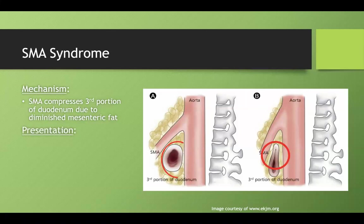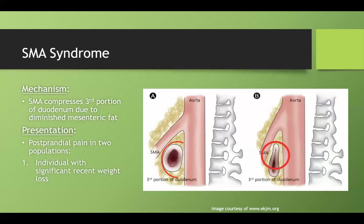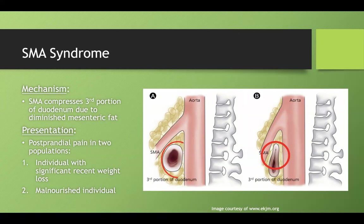Two conditions can cause SMA syndrome, both involving a rapid loss of the fat cushion. First, somebody with significant recent weight loss — if a lot of fat is mobilized, you may lose the mesenteric fat that protects the duodenum. Second, anybody malnourished likely doesn't have fat stores in the first place. The key symptom to know is postprandial pain, as eating pushes a food bolus against the obstructed lumen, causing distension and inflammation.